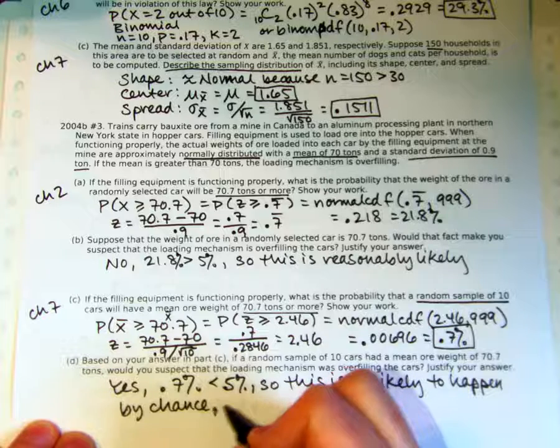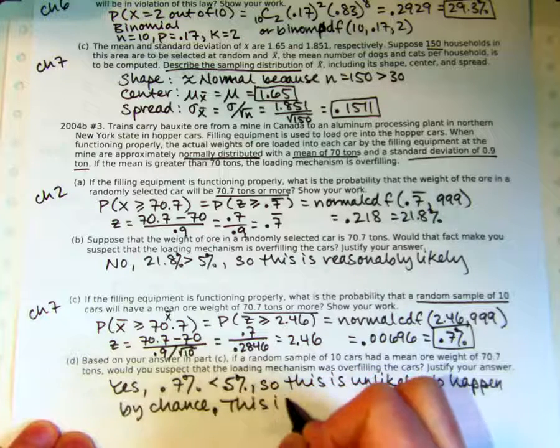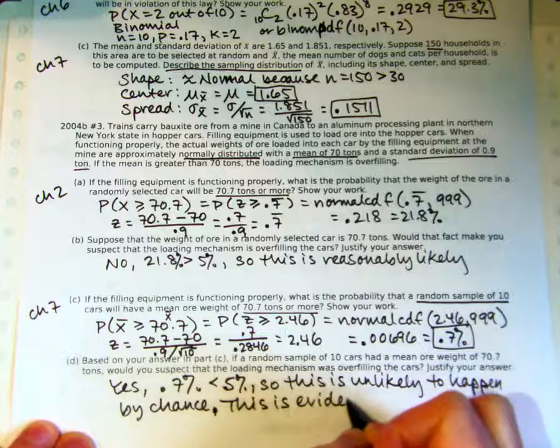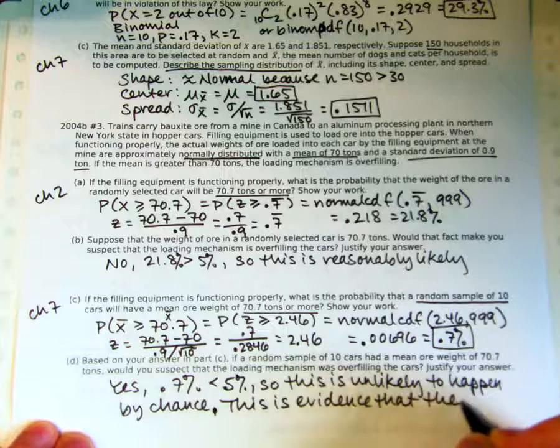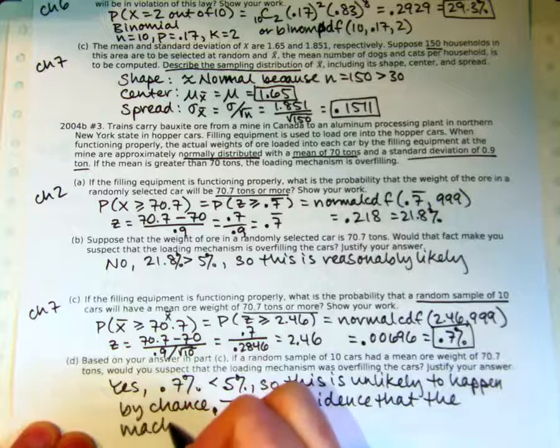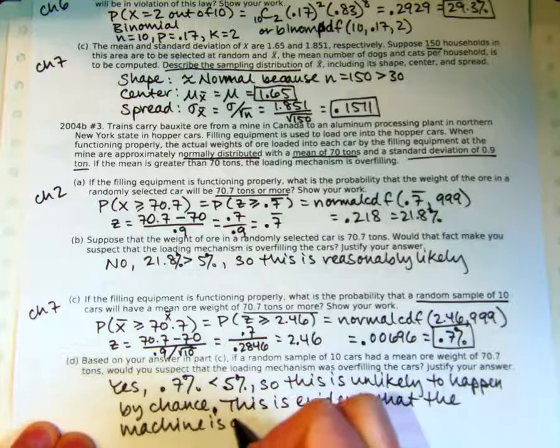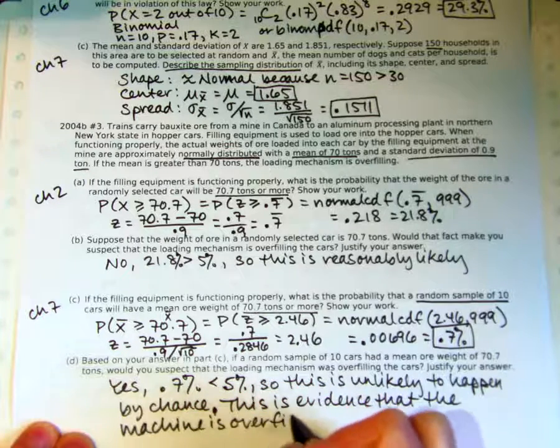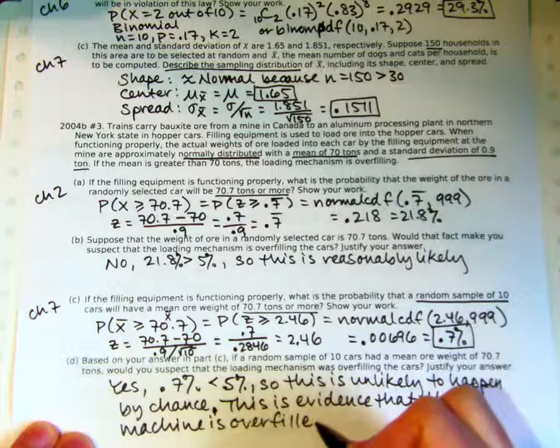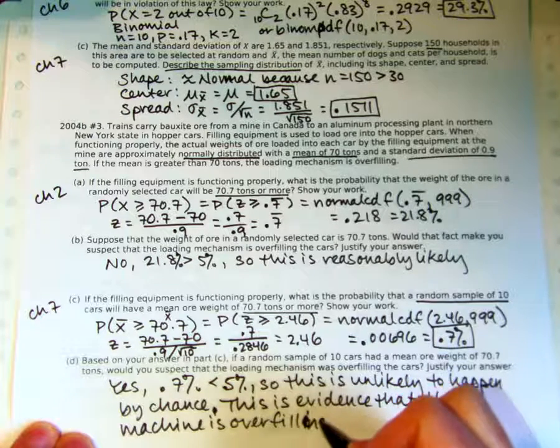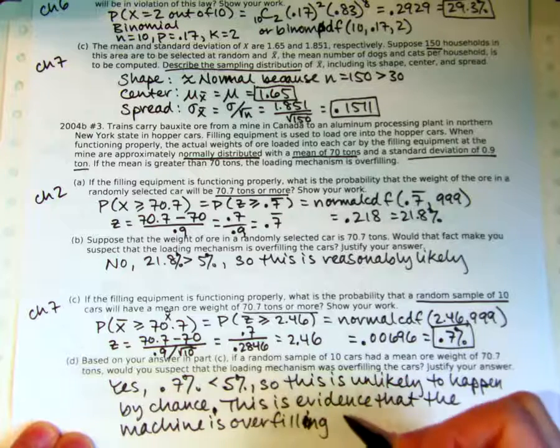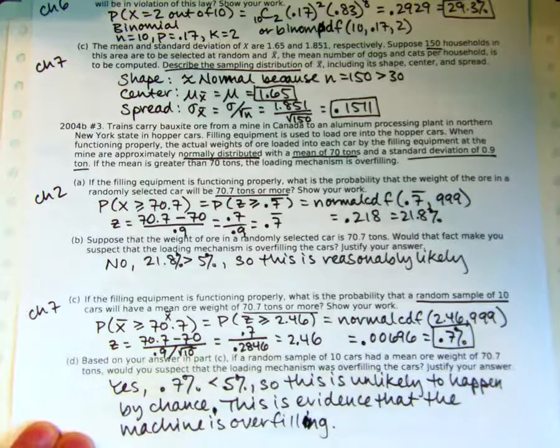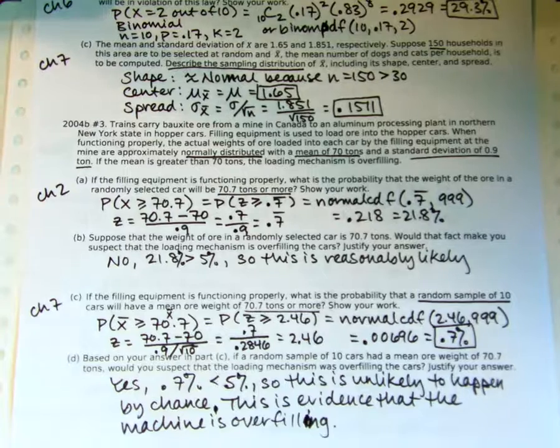So one cart being that big was not strong enough evidence, but 10 carts with an average that big is definitely strong evidence. You can always get stronger evidence by doing a larger sample.